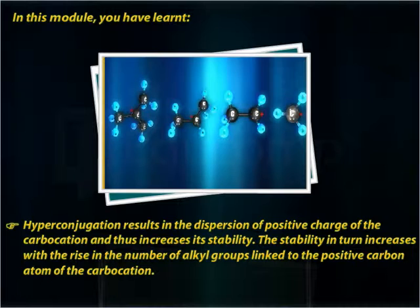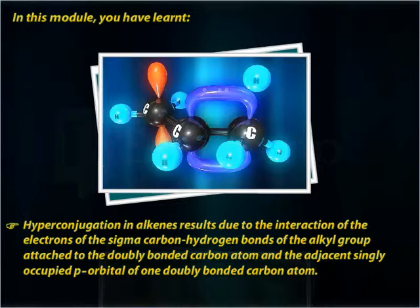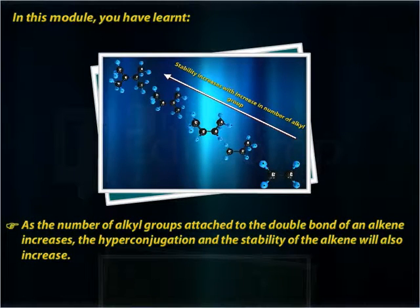Stability increases with the rise in the number of alkyl groups linked to the positive carbon atom of the carbocation. Hyperconjugation in alkenes results from the interaction of the electrons of the sigma carbon-hydrogen bonds of the alkyl group attached to the doubly bonded carbon atom and the adjacent singly occupied p orbital. As the number of alkyl groups attached to the double bond of an alkene increases, hyperconjugation and the stability of the alkene also increase.